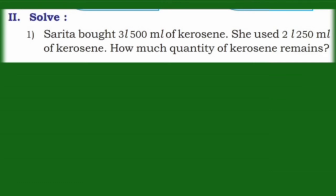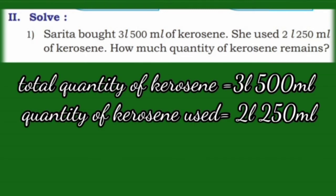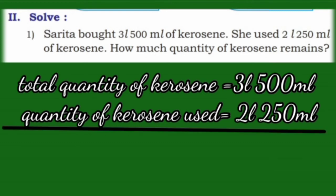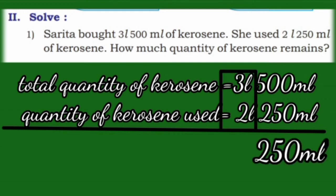Now second sum — solve this word problem. First one: Sarita bought 3 liter 500 ml of kerosene. She used 2 liter 250 ml of kerosene. How much quantity of kerosene remains? We write the data: total quantity of kerosene is 3 liter 500 ml, quantity used is 2 liter 250 ml. Subtract 500 minus 250 ml is 250 ml. 3 liter minus 2 liter is 1 liter. Answer is 1 liter 250 ml.